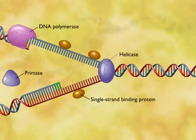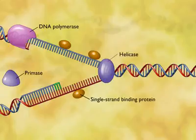Because the two complementary strands of the DNA molecule are oriented in opposite directions and DNA polymerase can only accommodate replication in one direction, two different mechanisms for copying the strands of DNA are employed. One strand is replicated continuously toward the unwinding, separating portion of the original DNA molecule.